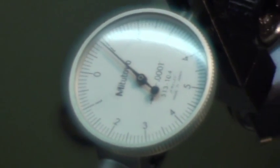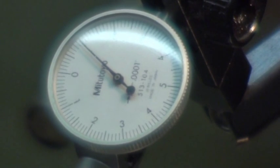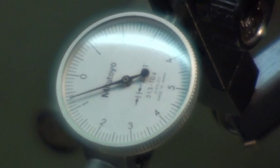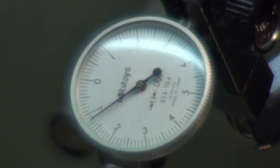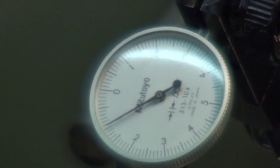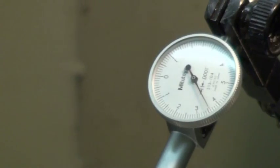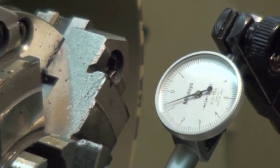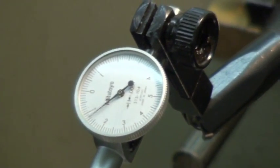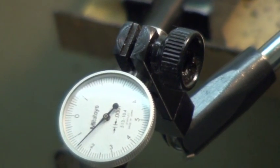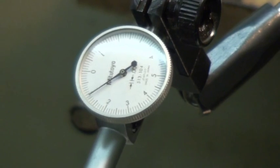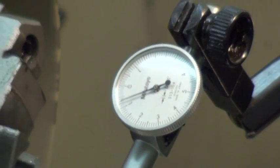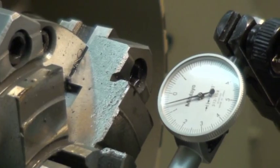The rod is coming up, so we are going to loosen this angular adjustment screw and run our indicator back towards the chuck.